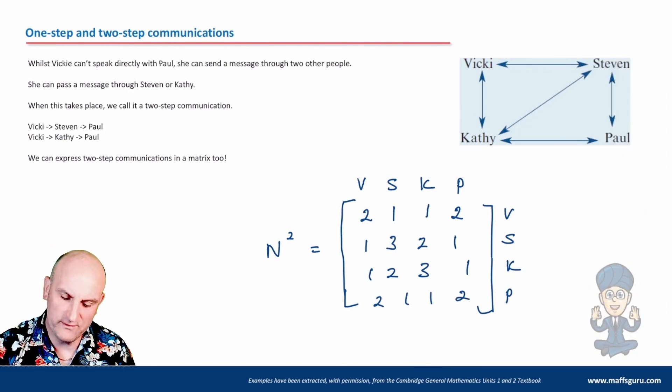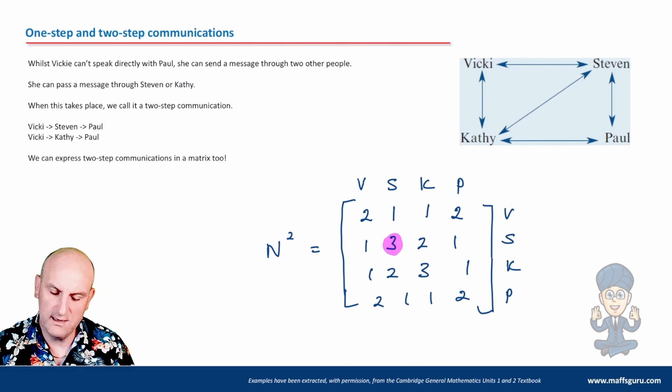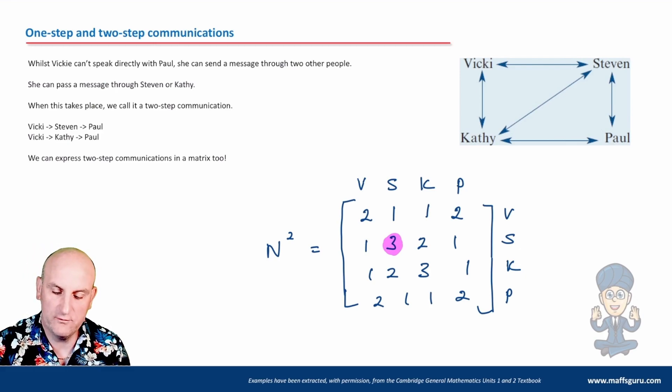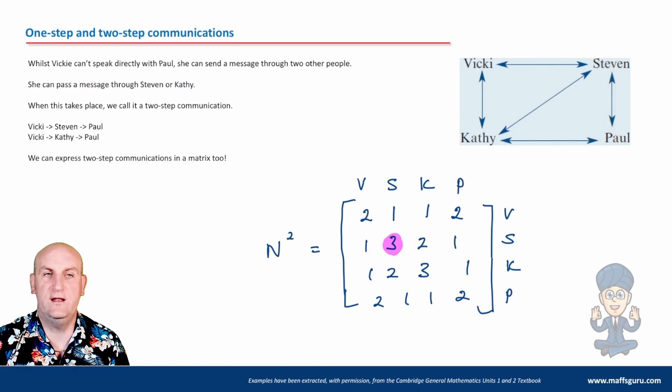So what on earth is this 3? So that's Stephen to Stephen. That there are three ways of Stephen sending a message to himself. Well, of course. Because we can go Stephen to Vicky and back again. Stephen to Kathy and back again. And Stephen to Paul and back again. So again, understanding what each of these values here means is really important. And you can actually have three-step communication matrices and whatever else. But for the moment, let's just leave it at two steps.